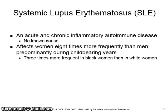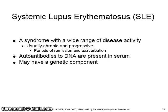Systemic lupus erythematosus, or SLE, is an acute and chronic inflammatory autoimmune disease with no known cause. It affects women eight times more frequently than men, predominantly during the childbearing years, and is three times more frequent in Black women than in white women. SLE is a syndrome with a wide range of disease activity, usually chronic and progressive with periods of remission and exacerbation. Auto-antibodies to DNA are present in the serum and there may be a genetic component.